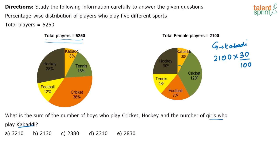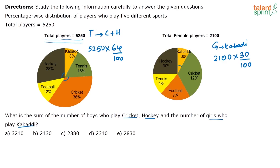Now, what is given in the question? You have to find the number of boys who play cricket and hockey. You have 28 percent playing hockey and 36 percent playing cricket, so put together that is 64 percent. So 5250 into 64 by 100 is the total who play cricket and hockey. To get the number of boys, I have to subtract the number of girls who play cricket and hockey. Cricket is 120 degrees and hockey is 90 degrees, so 120 plus 90 is 210 degrees. So 2100 into 210 by 360 gives the girls playing cricket and hockey.